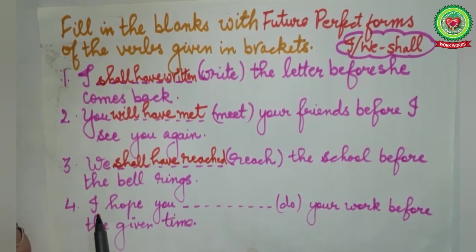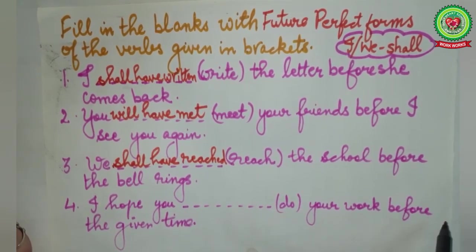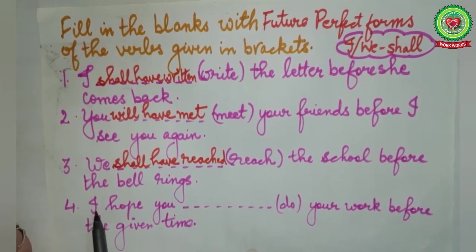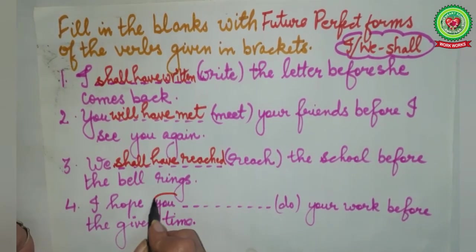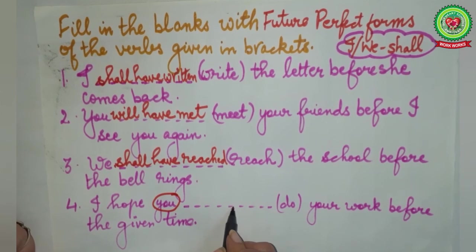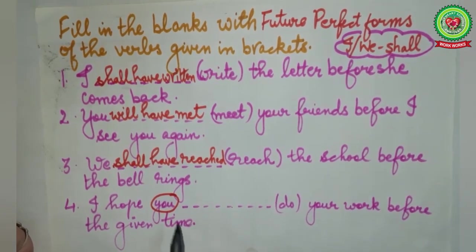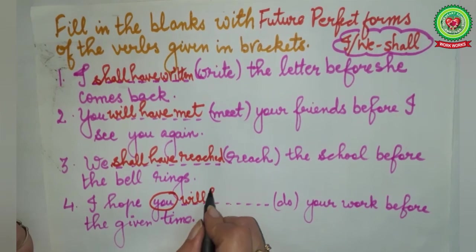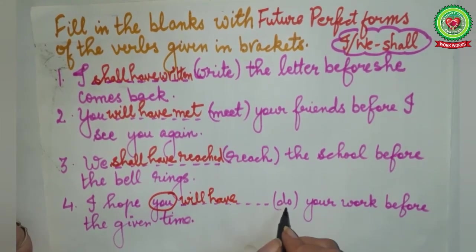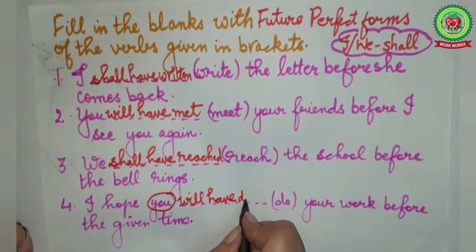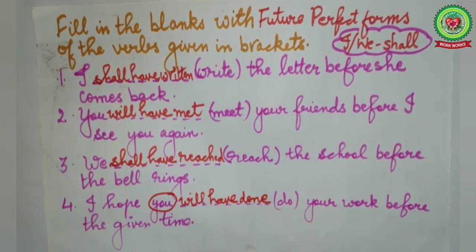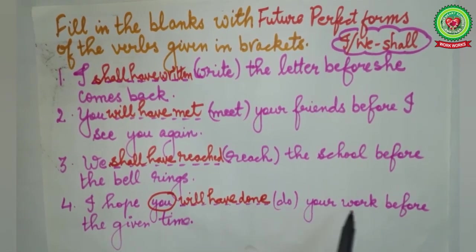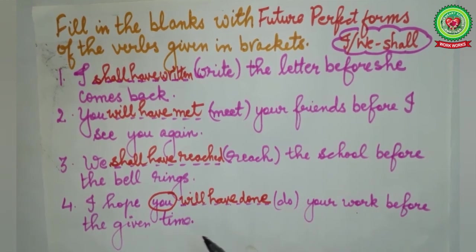In the last sentence, it is given: 'I hope you dash your work before the given time.' Here, we do not take 'I' as the subject — the dash follows 'you,' so 'you' is the subject. With 'you' we use 'will have.' Past participle of 'do' is 'done.' The sentence becomes: 'I hope you will have done your work before the given time.'